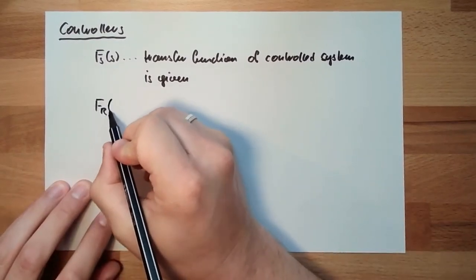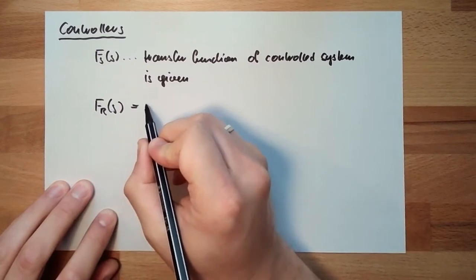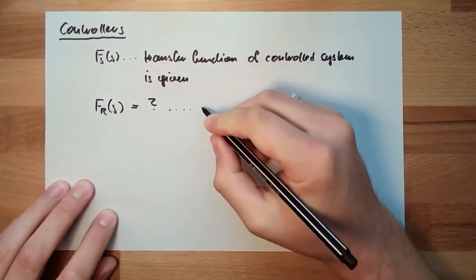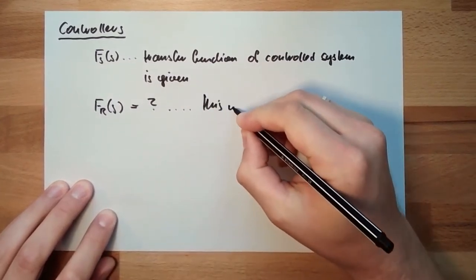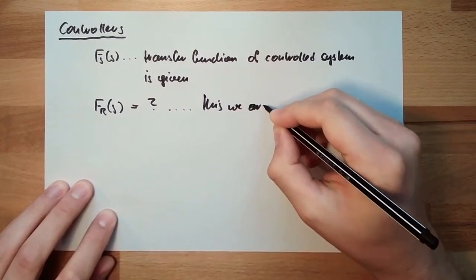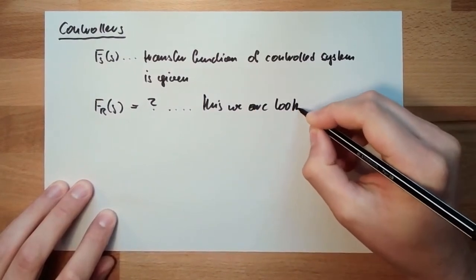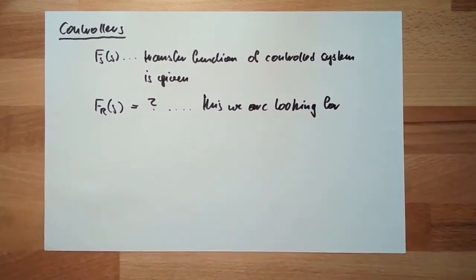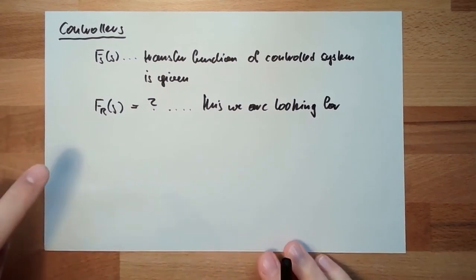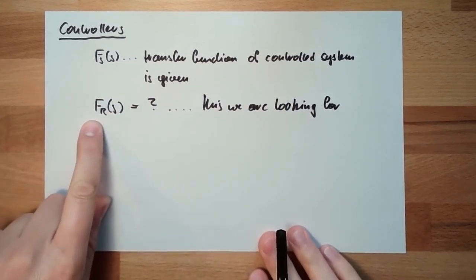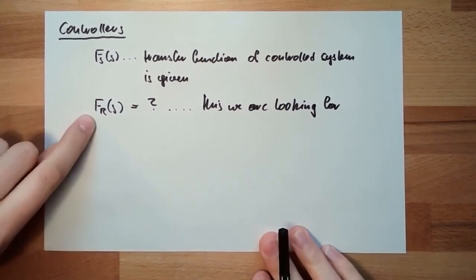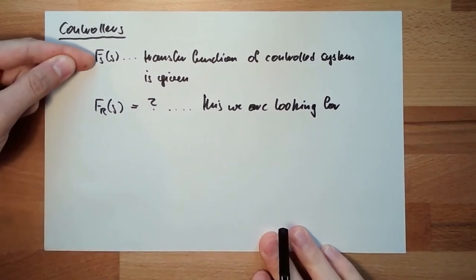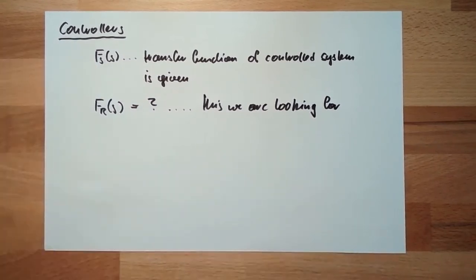Fr(s), this we are looking for. We want to find a matching transfer function of the regulator, of the controller, matching to the system so that everything is smooth.